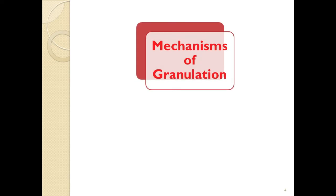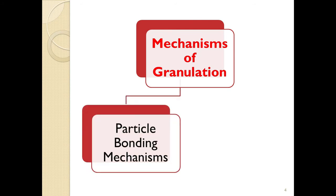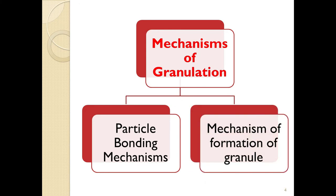Now we will start with the actual part: mechanisms of granulation. Mechanisms of granulation are categorized into two groups. First is particle bonding mechanism — in this we learn how particles bind to each other and by which mechanisms. Second is mechanism of granule formation — after bonding, how these particles get converted into uniform-shaped granules.